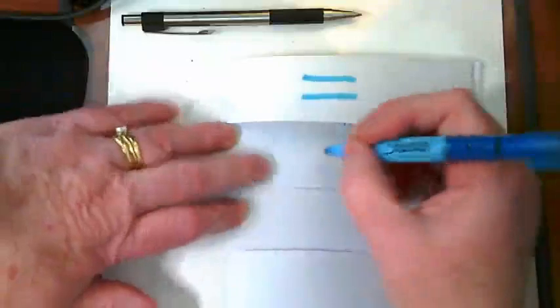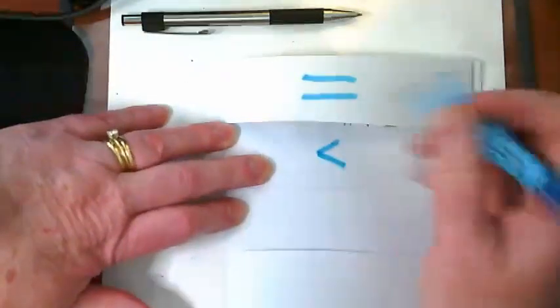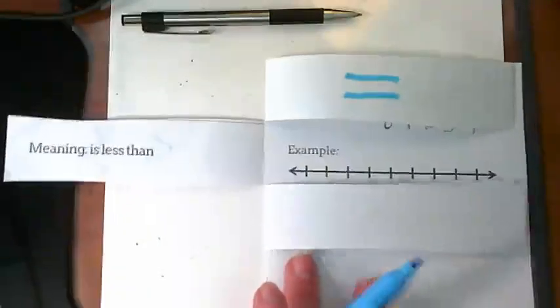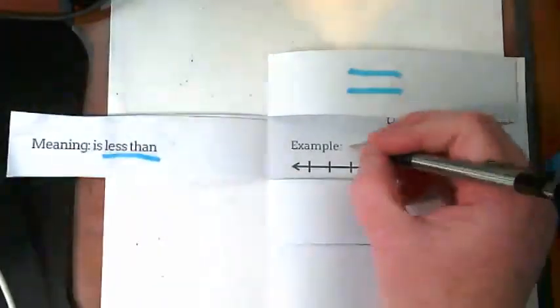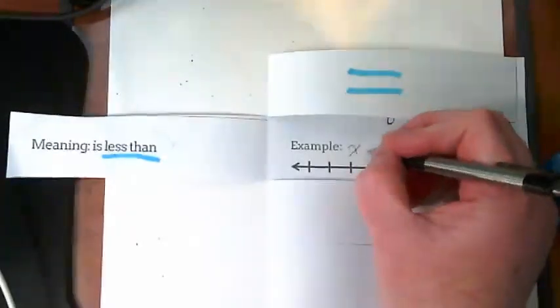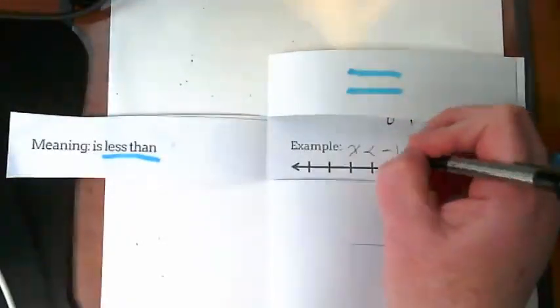Our next symbol is less than. When you open it up, you can see that it says the meaning is less than. An example in this case, the x is less than negative 1.